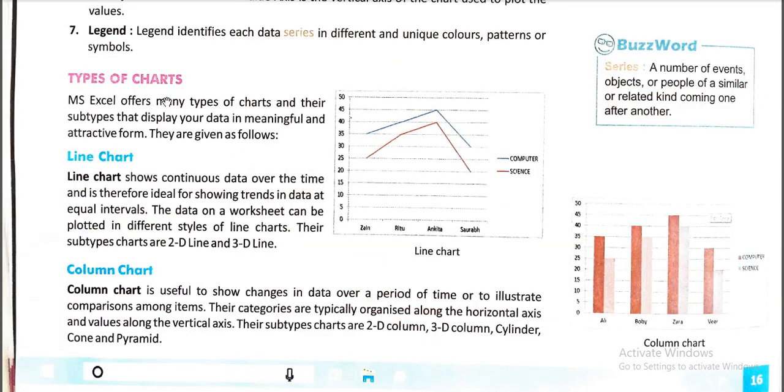Types of charts. Here are some types of chart. MS Excel offers many types of chart and their subtypes that display your data in meaningful and attractive form. They are given as follows. First one is line chart. Line chart shows continuous data over time and is therefore ideal for showing trends in data at equal intervals. The data on a worksheet can be plotted in different styles of line charts. Their subtype charts are 2D line and 3D line.